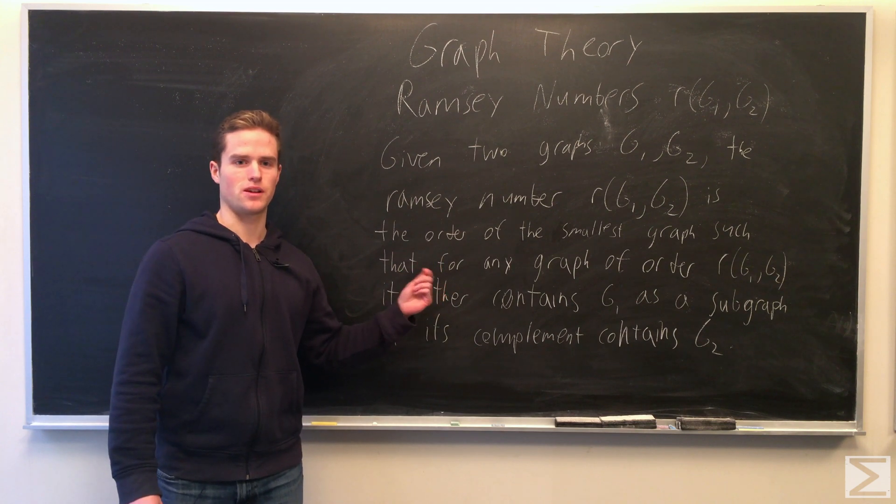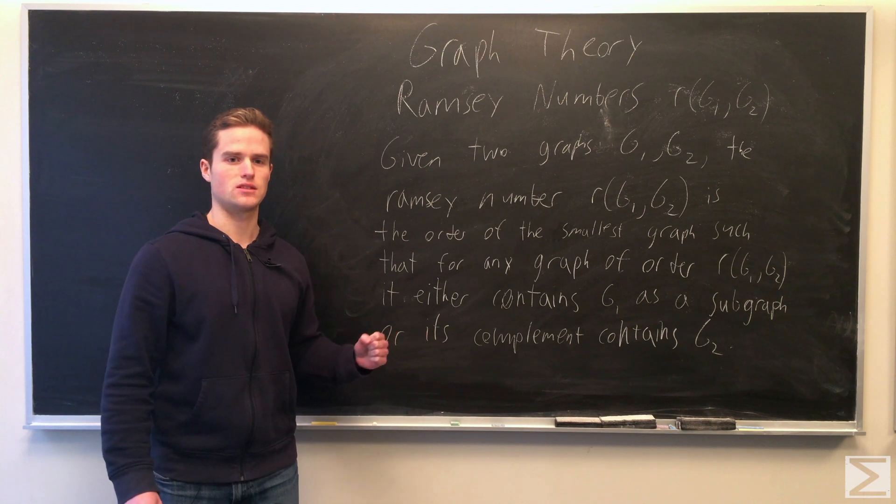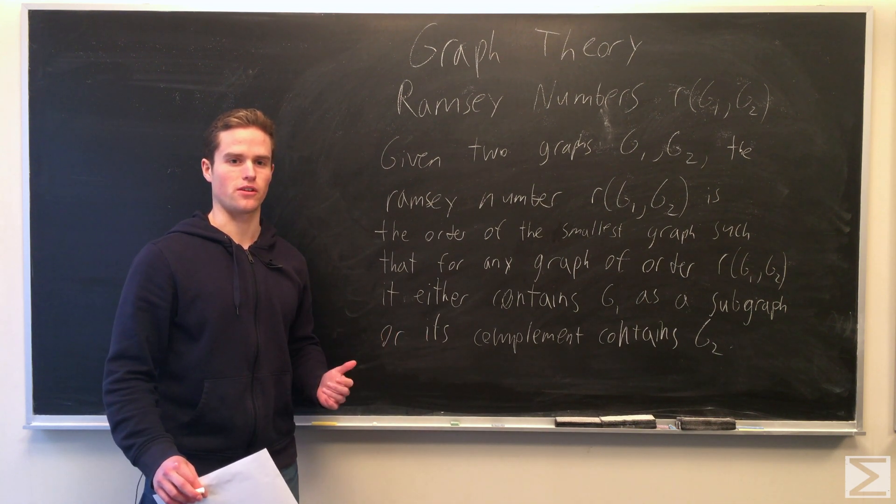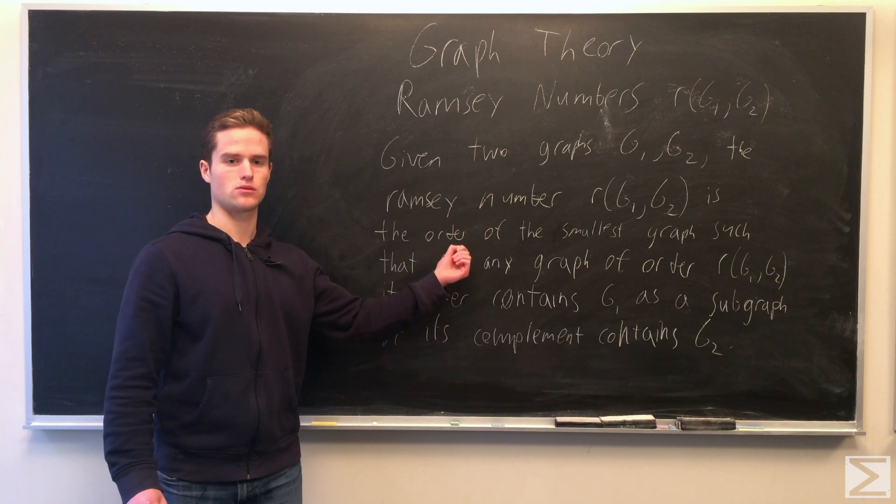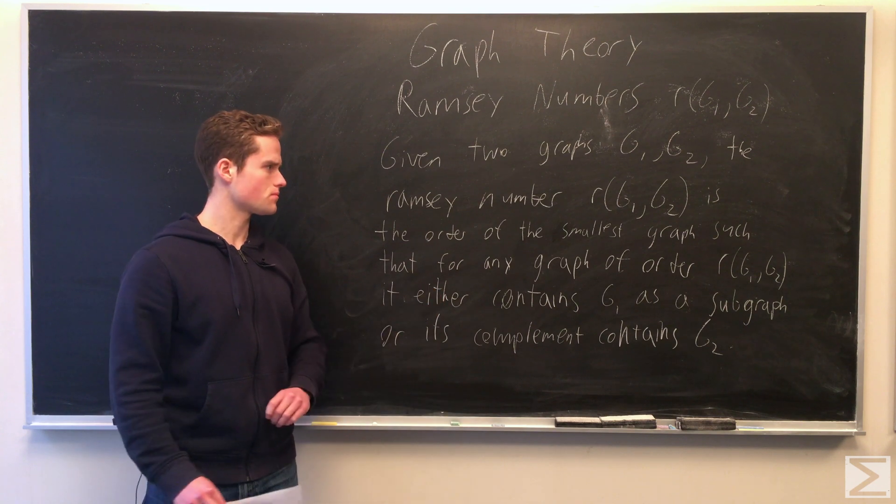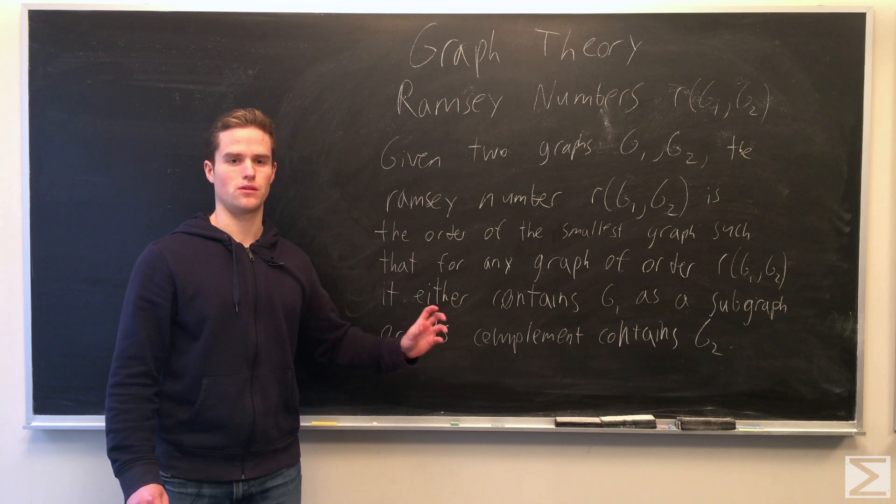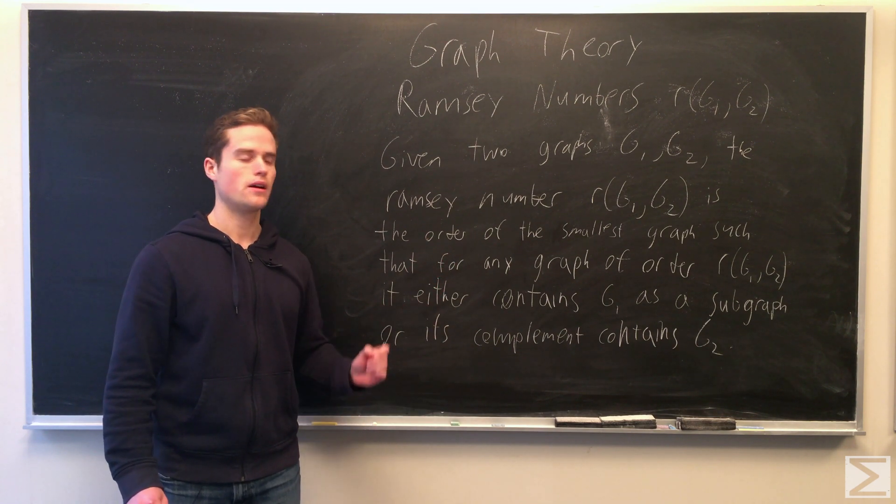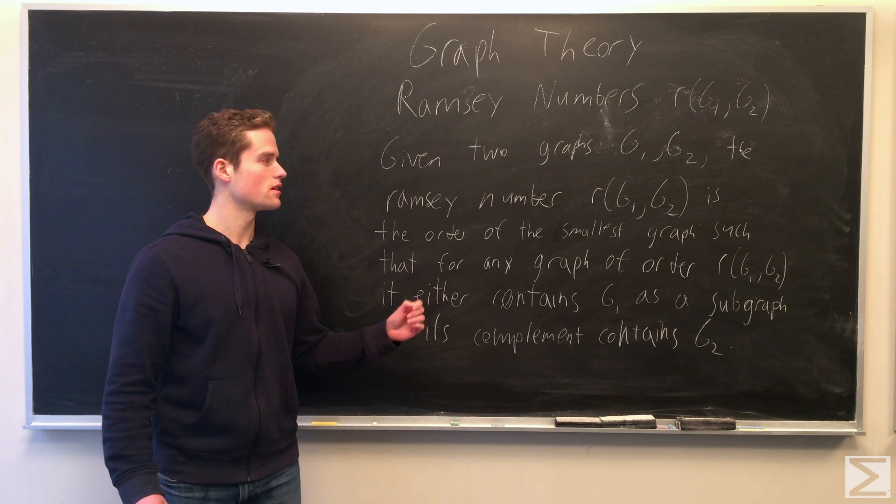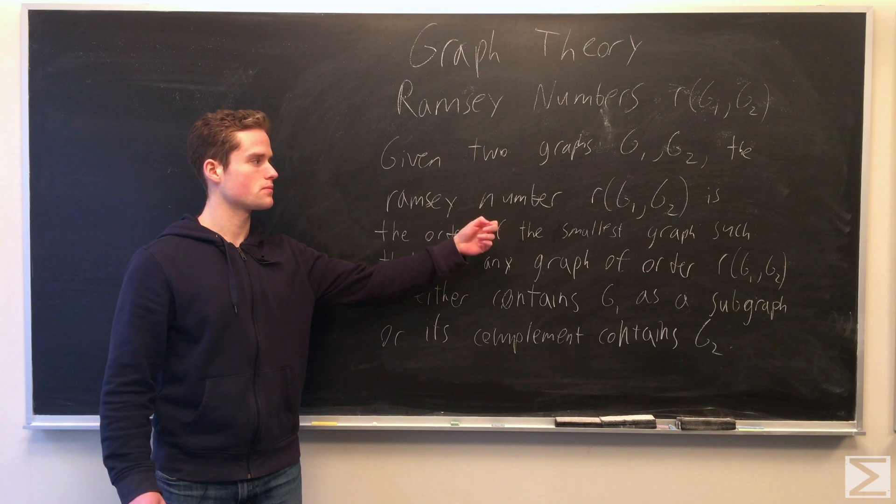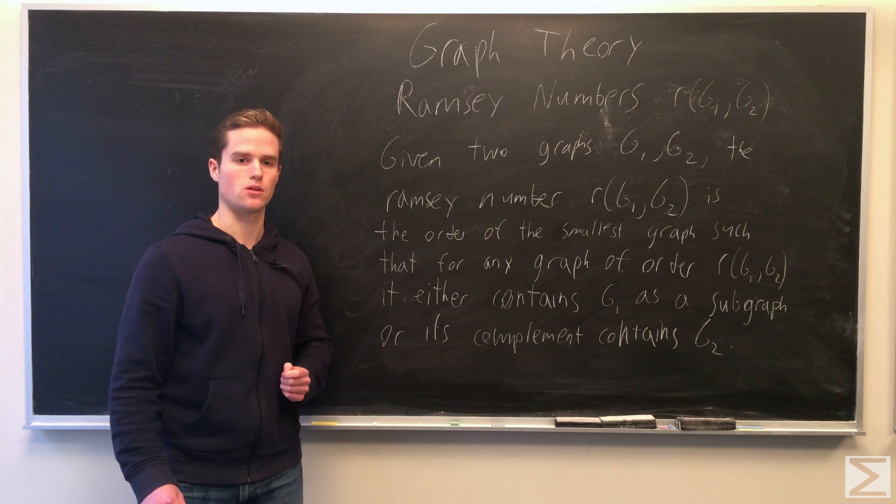And so these Ramsey numbers imply that as you get bigger graphs, some kind of order forms. Either we can find certain kinds of subgraphs in the graph or in its complement. This is kind of like saying if we take a complete graph and color all the edges either red or blue, either the graph with all the red edges contains g1 or the graph with all the blue edges contains g2. Some kind of order forms from large graphs.